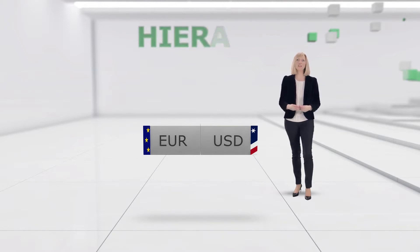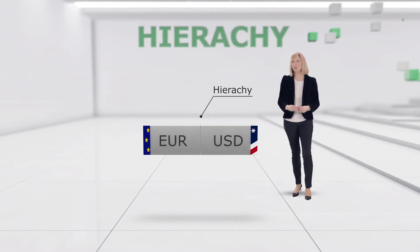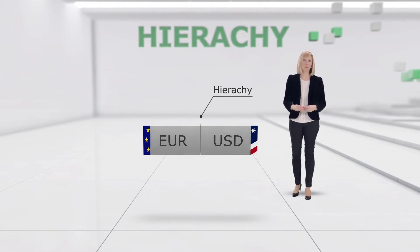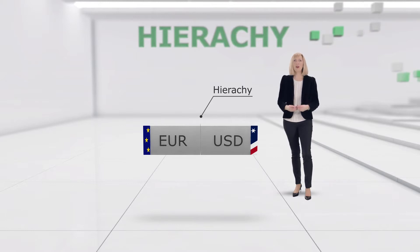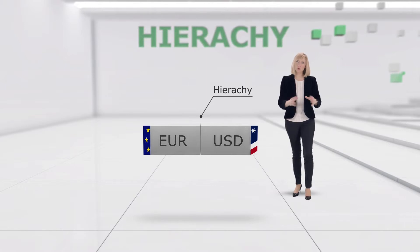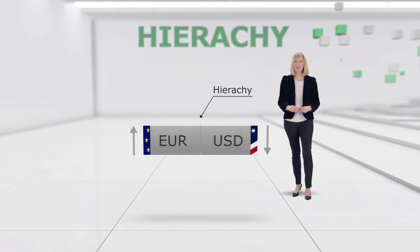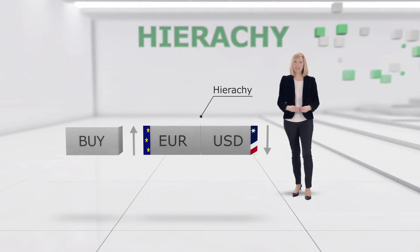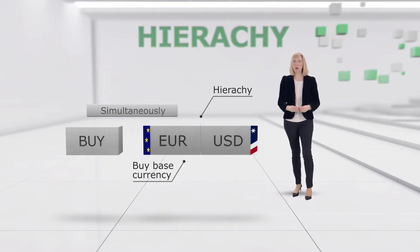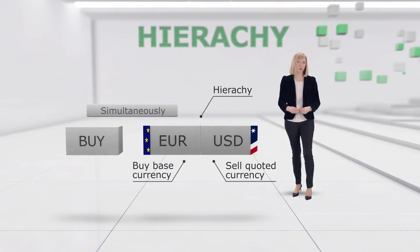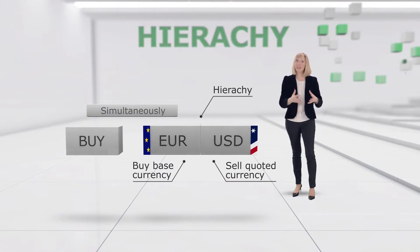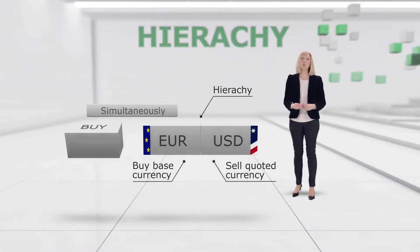Pairs are typically ranked in a certain hierarchy, which determines the order in which the two currencies in a pair are named. For example, when Euros are traded against US dollars, they are always traded as Euro-dollar. So if you wanted to speculate that the Euro would increase in value against the US dollar, you would buy Euro-dollar, meaning you buy Euros while at the same time selling the converted amount of US dollars. Meanwhile, if you wanted to speculate that US dollars would rise against Euros, then you would sell Euro-dollar.